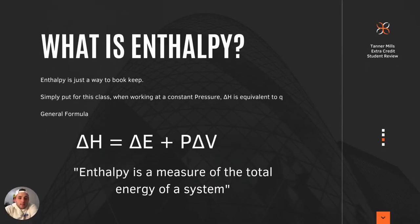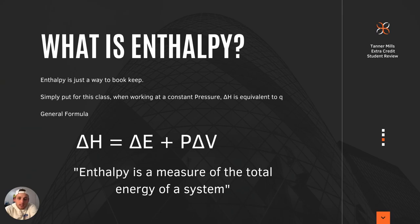So to start off, what is enthalpy? Professor Mortensen said that enthalpy is just a way to bookkeep — it's just this way that scientists have developed to keep track of energy change over any chemical process. Simply put, for this class when we're working at constant pressures, your change in enthalpy or your delta H is equivalent to your heat, and that's the most basic and simplified version.